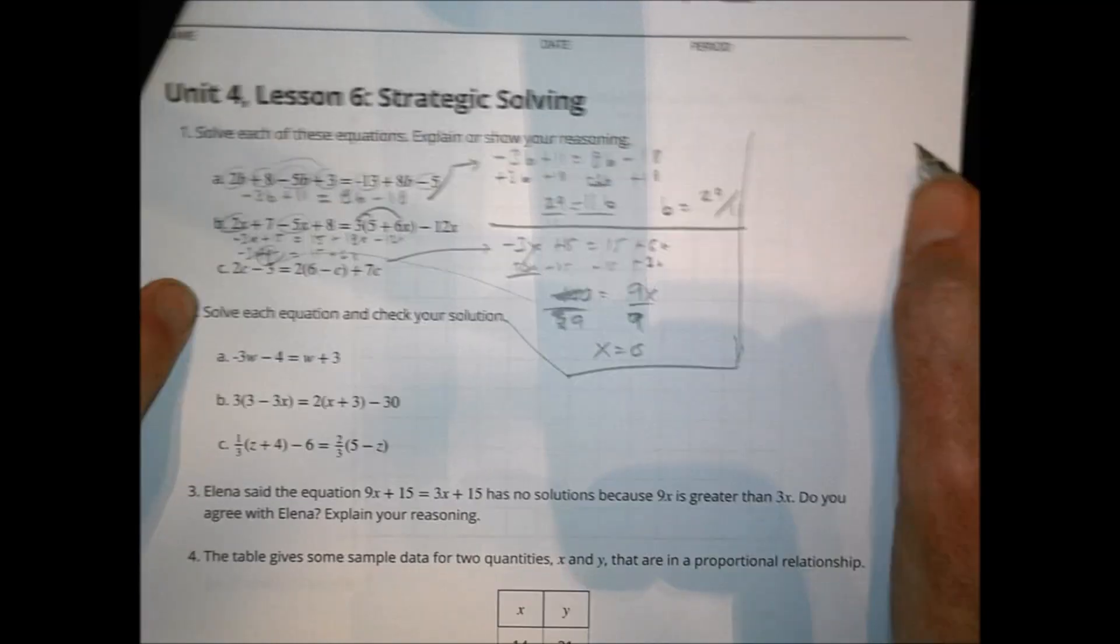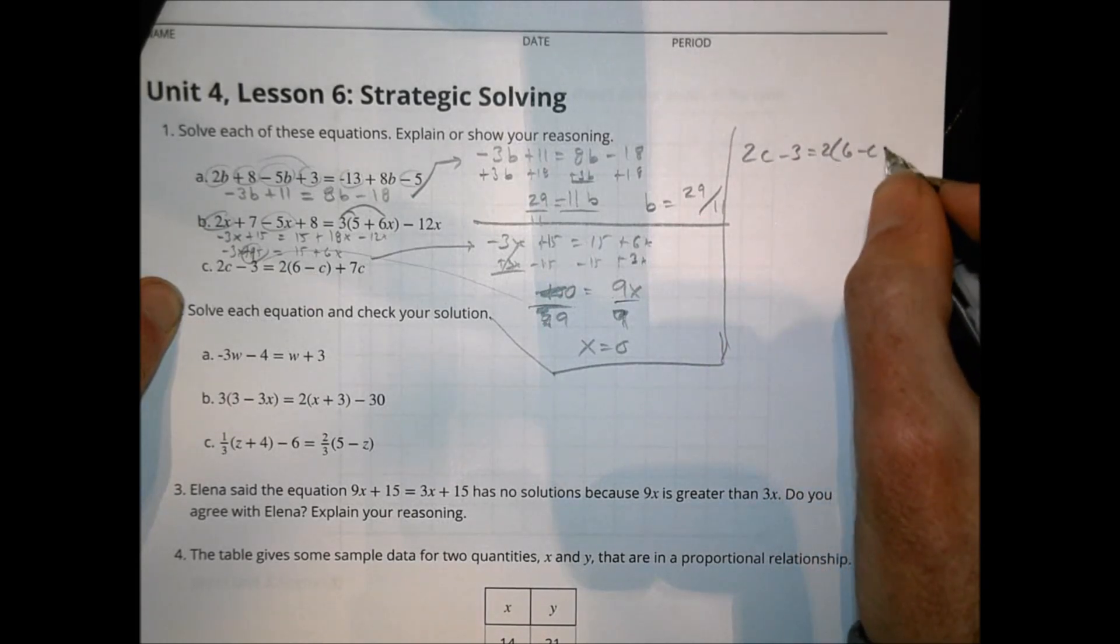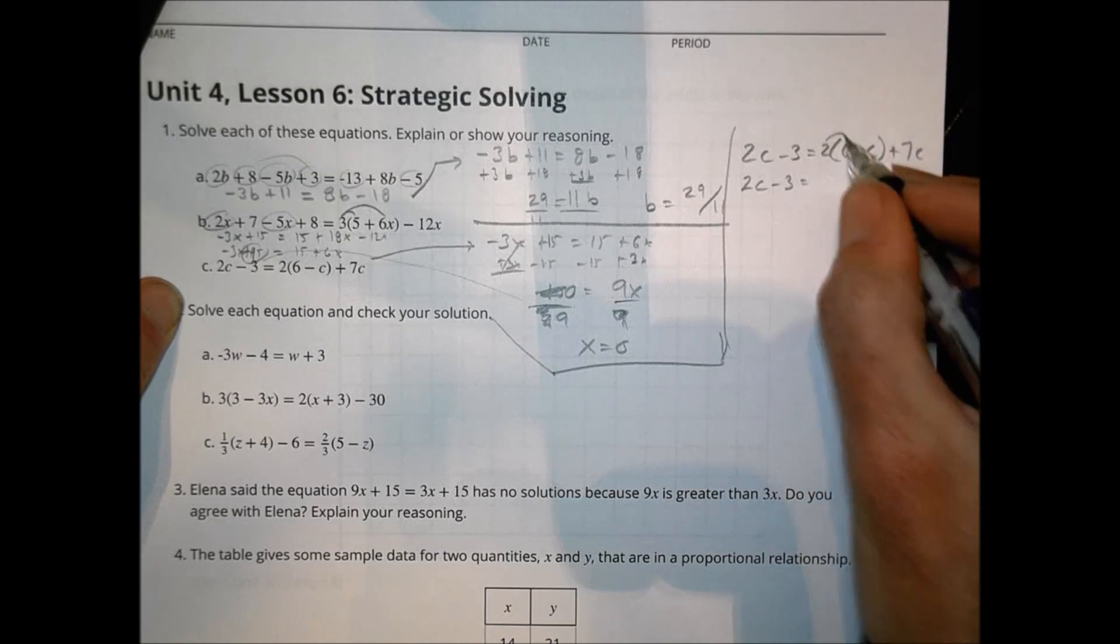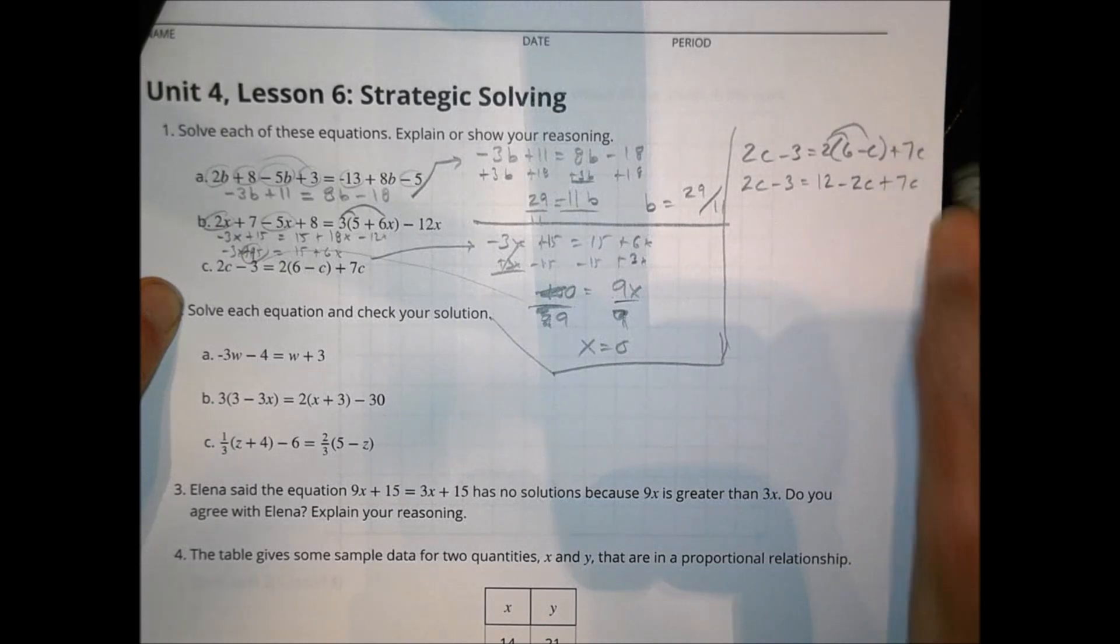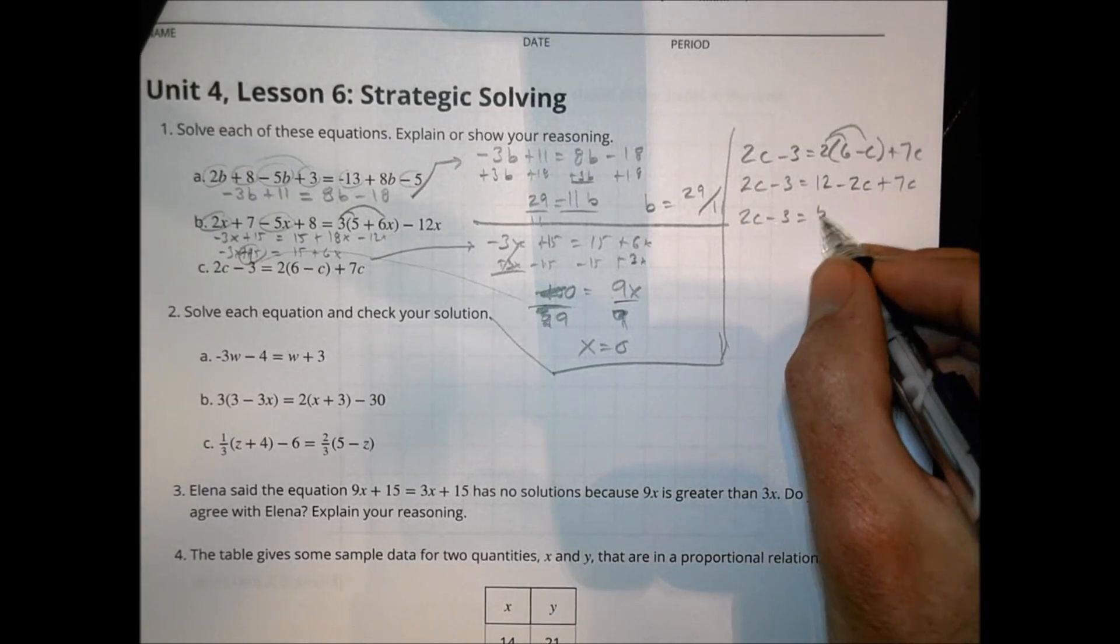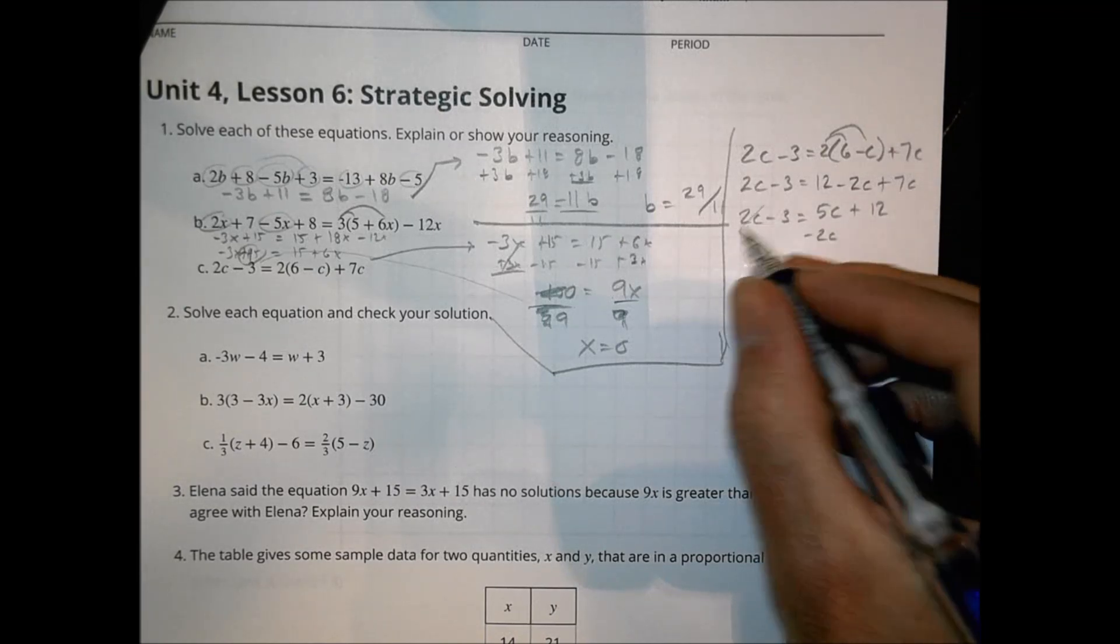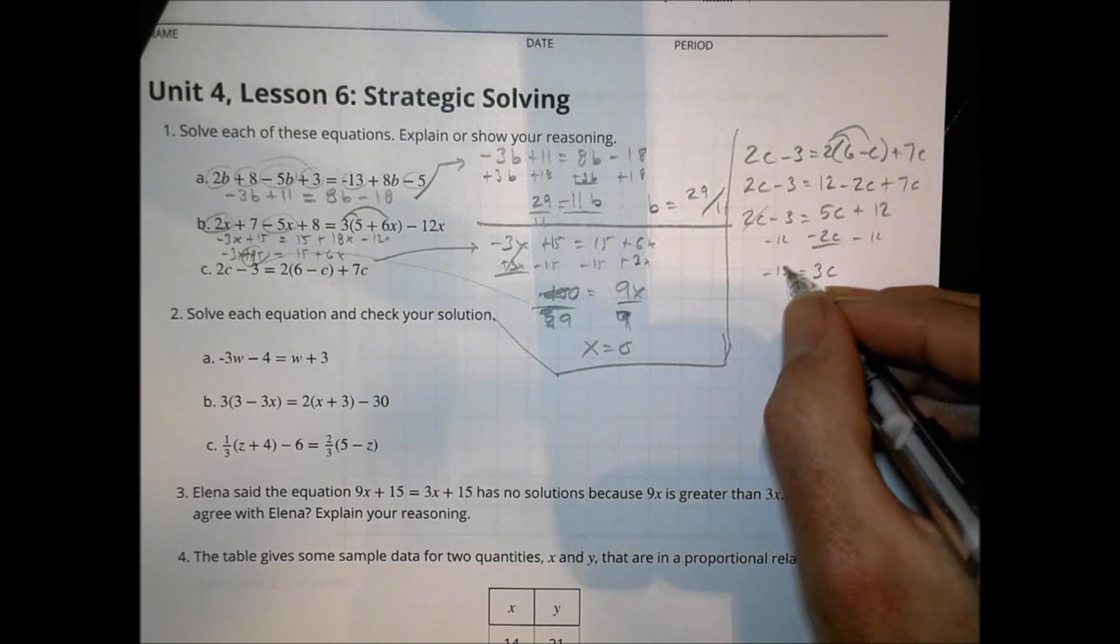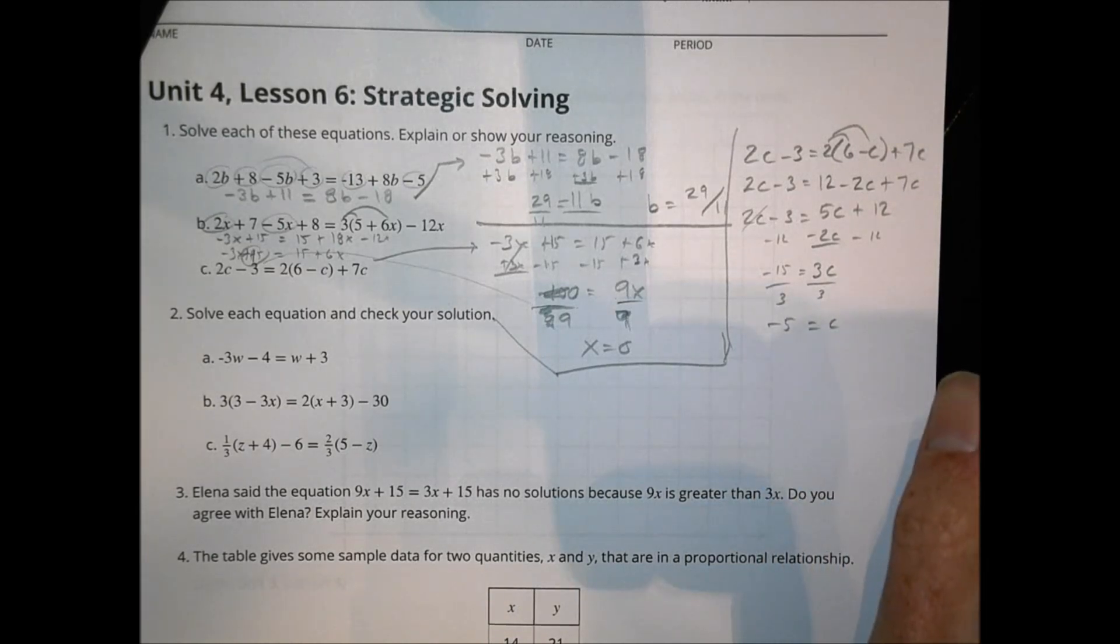Now let's do letter C. Finally, for our last one here, we have 2C minus 3 equals 2 times the sum of 6 minus C plus 7C. So this stays 2C minus 3. Redistribute. 2 times 6 is 12. 2 times negative C is negative 2C plus 7C. This stays the same. And over here I have 7 minus 2, which is a 5C plus 12. I can subtract 2C from both sides. So I have a 3C there. And I can subtract 12 from over here. So I have negative 15 divided by 3. And negative 5 is going to equal C.